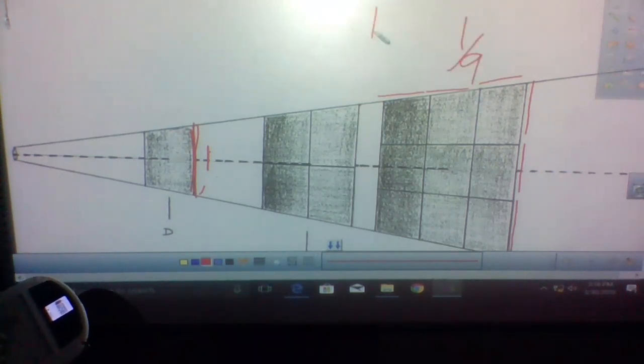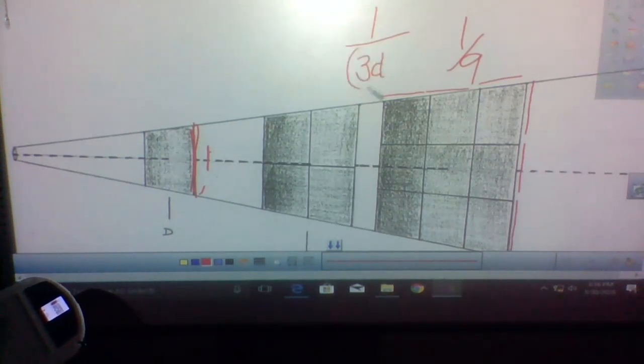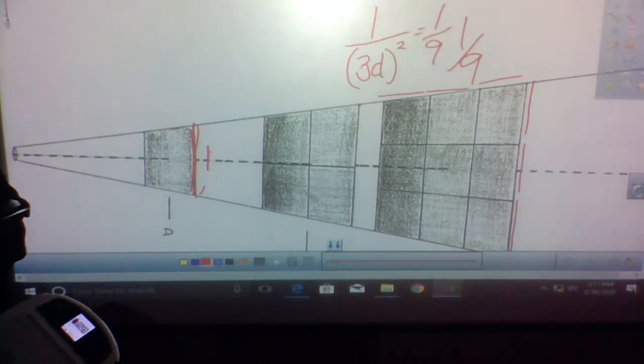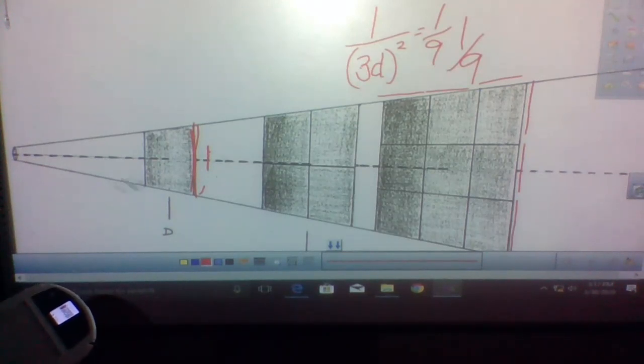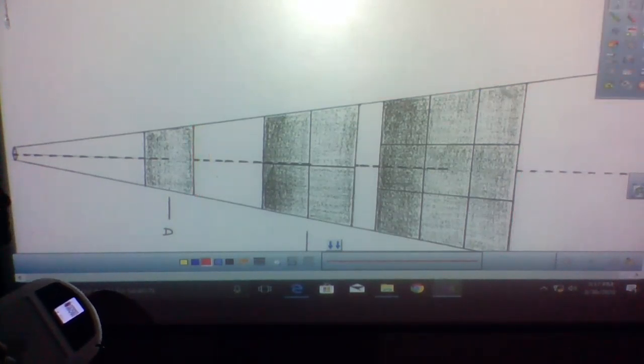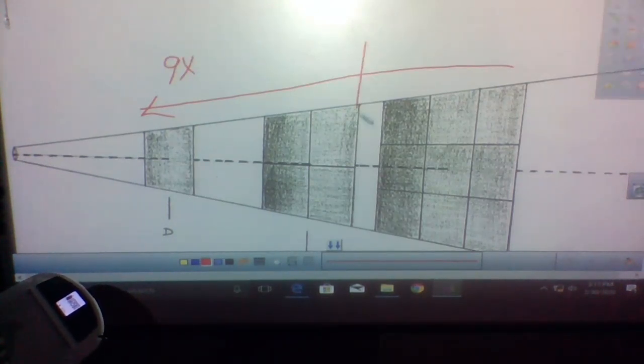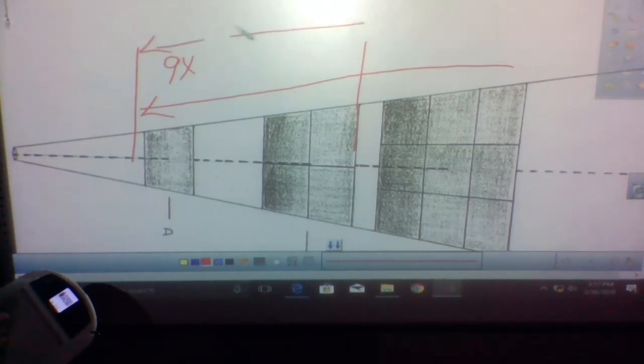And how would that fit in the formula? One over three times d. The three is squared, so you notice that becomes one-ninth. Now, what if I'm working my way backwards? What if I go from here and go closer? It gets stronger by nine times from here to here. If I went from here to here, it gets stronger by four times.